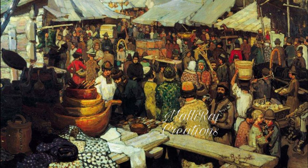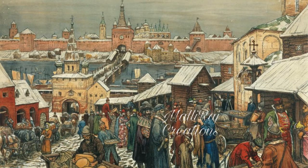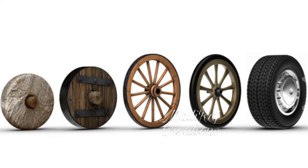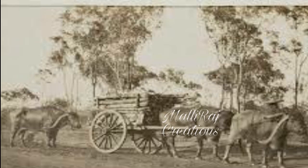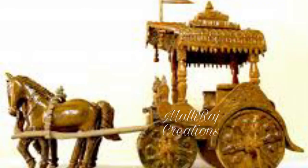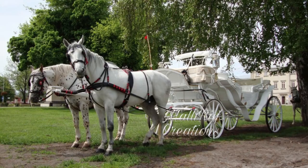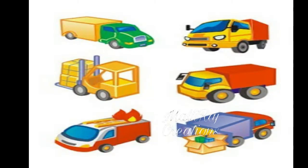In olden days, people moved from place to place in search of food. They either walked on foot or used animals for travelling or carrying loads. The invention of the wheel changed their life - it was one of the most important inventions. It helped humans to travel faster. People learned to make carts, chariots, and vehicles with wheels, which were pulled by bullocks, horses, and other animals.